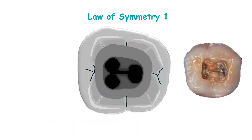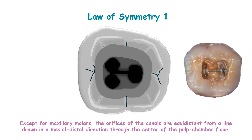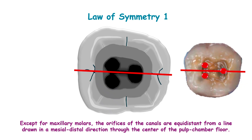Coming to law of symmetry 1: this law applies for all teeth except maxillary molars. The red dotted lines indicate the orifices of the canals, which are equidistant from a line drawn in a mesiodistal direction through the center of the pulp chamber floor.